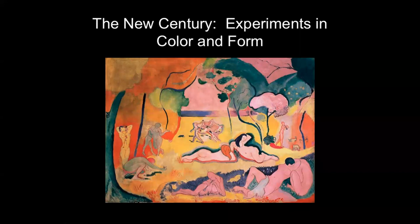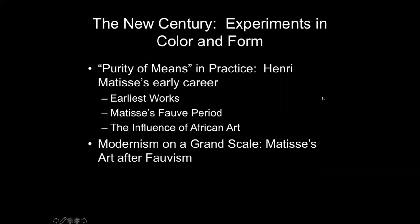We're finally to the 20th century — that's the new century, not the one we're in now. Experiments in color and form. Hopefully this will make sense that a lot of the strands happening when we were looking at Impressionism and Post-Impressionism will come together into some very new stuff that modern artists will do. So modernist artists — when I say that word, I mean the art of the early 20th century. Purity of Means and Practice: Henri Matisse. That's what this entire lecture is going to be about. We'll look at his earliest works, the Fauvist works, and a little bit of the influence of African art.